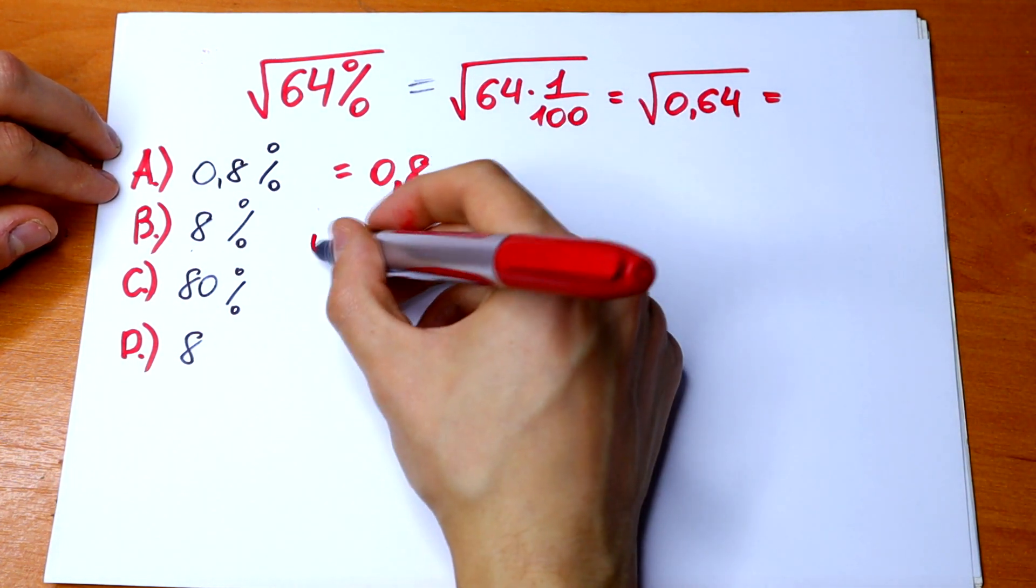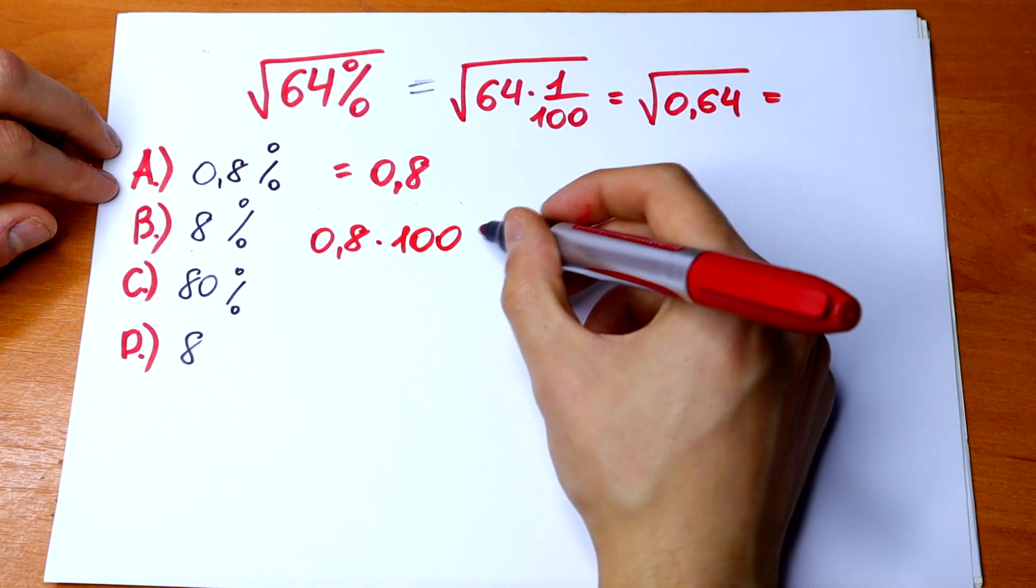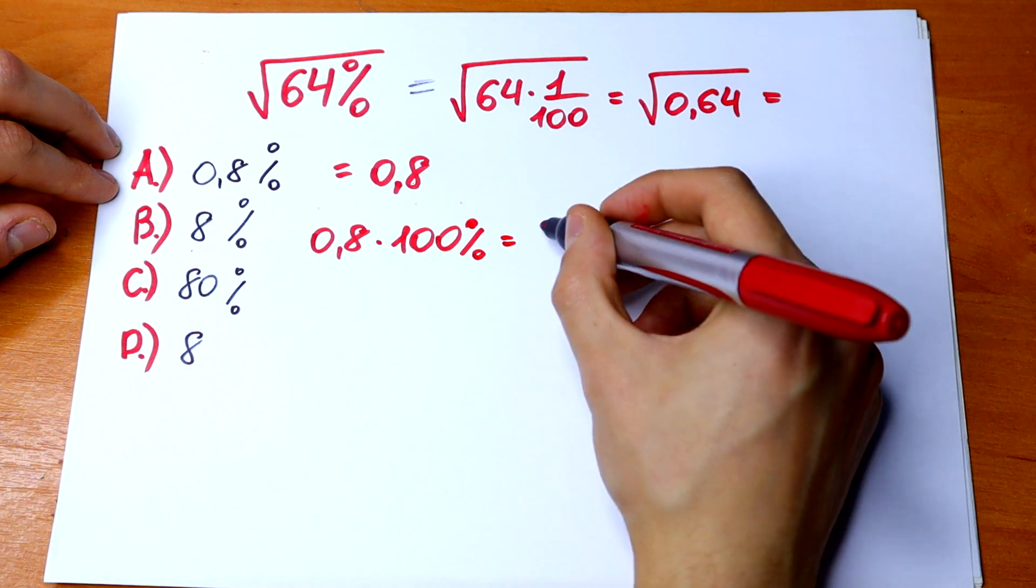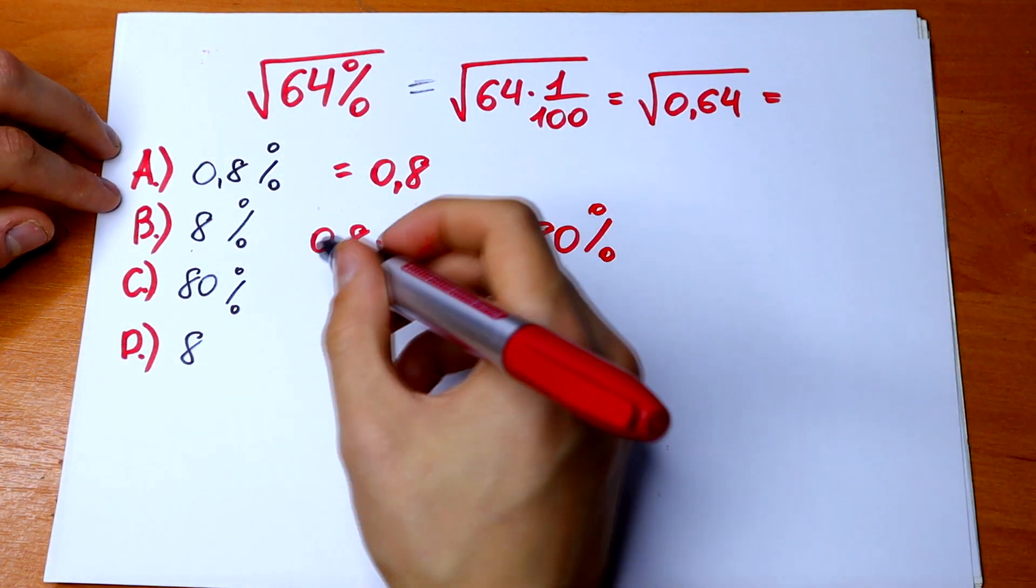So we will have 0.8 times 100, which will be 80 percent. That's option C.